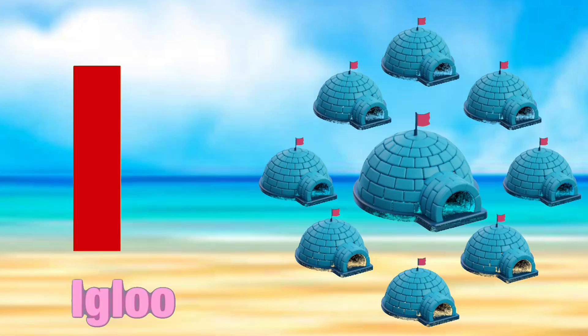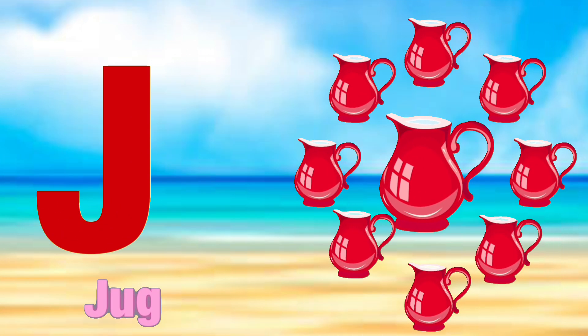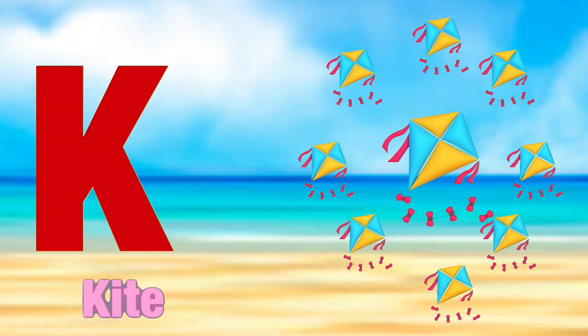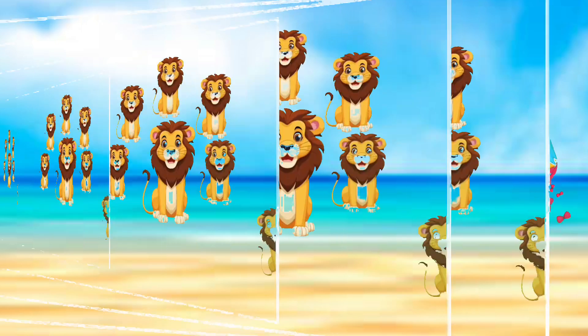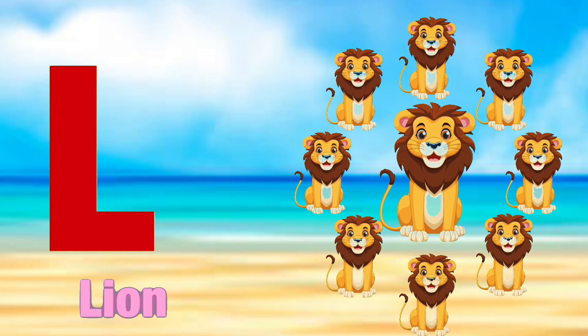I for igloo, i-i-igloo. J for jag, j-j-jag. K for kite, k-k-kite. L for lamb, l-l-lamb.